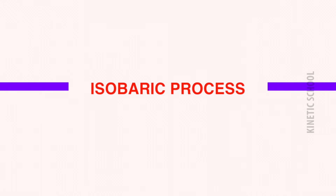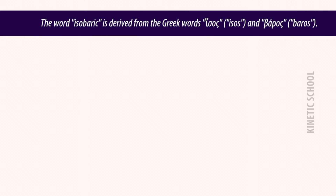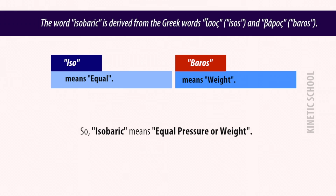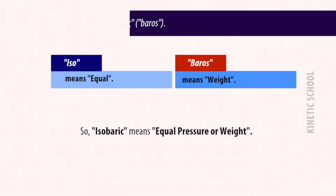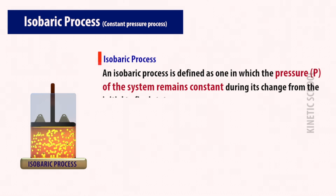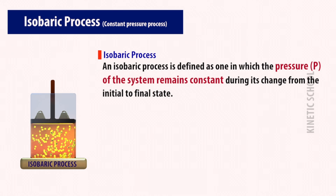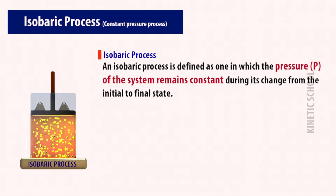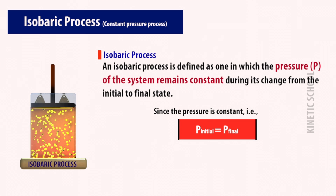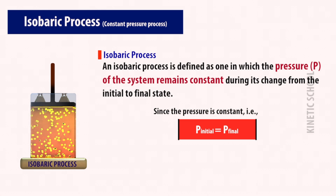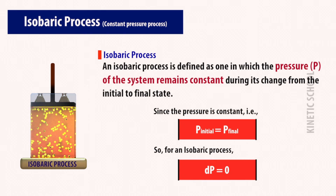The isobaric process: the word isobaric is derived from the Greek words 'isos' and 'baros.' 'Iso' means equal and 'baros' means weight, so isobaric means equal pressure or weight. An isobaric process is defined as one in which the pressure of the system remains constant during its change from the initial to final state. Since the pressure is constant, initial pressure equals final pressure, so for an isobaric process dP is equal to zero.